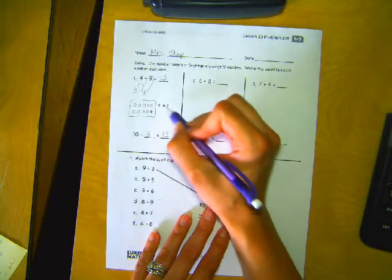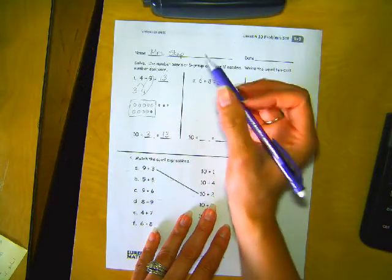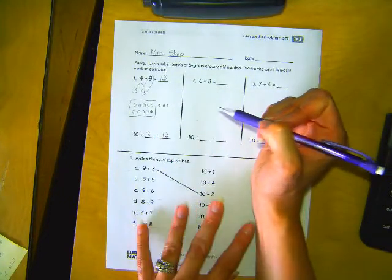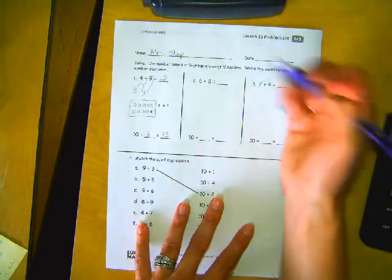So you can draw to get your answer but it also wants you to use your number bonds to get to your answer. Good way to check your work, right?